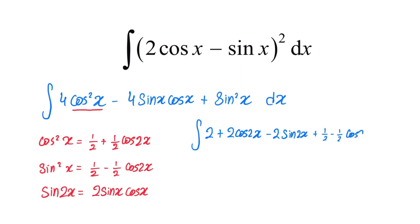So let's simplify this integral. 2 plus half is 5 over 2. 2 cosine 2x minus half cosine 2x is 3 over 2 cosine 2x. So now this integral is easier to evaluate.